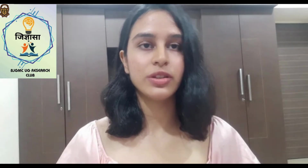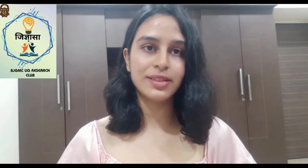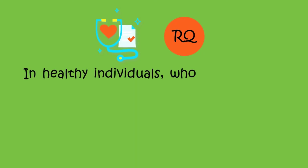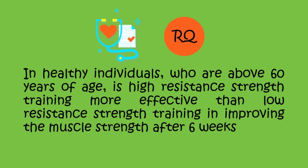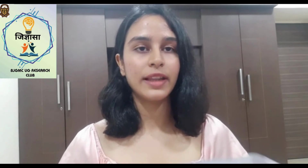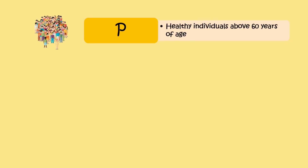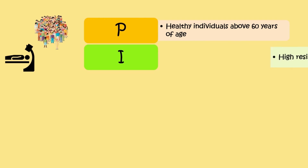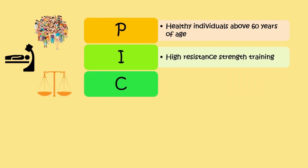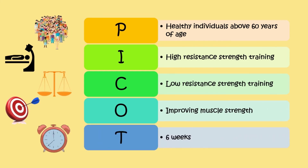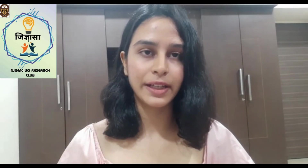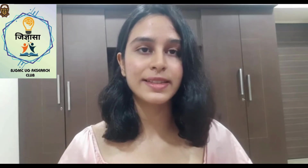Using this literature gap, the investigators formulated the question: 'In healthy individuals above 60 years of age, is high-resistance strength training more effective than low-resistance strength training in improving muscle strength after six weeks?' Here, the Population is healthy individuals above 60 years of age, the Intervention is high-resistance strength training, the Comparator is low-resistance strength training, the Outcome is improvement of muscle strength, and the Time Frame is six weeks. Once you know both the PICOT and FINER criteria, building a research question becomes much easier.